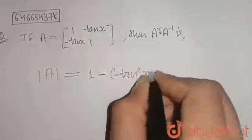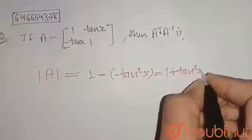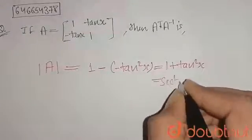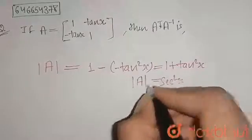So here I am getting 1 plus tan squared x. Now 1 plus tan squared x is sec squared x. So determinant of A will be equals to sec squared x.